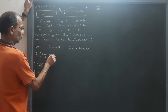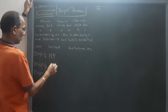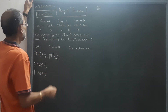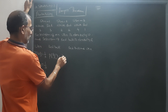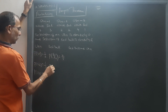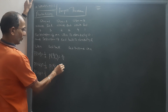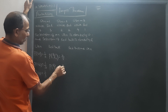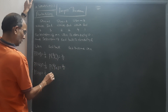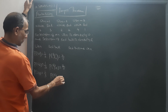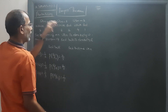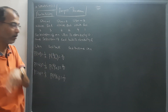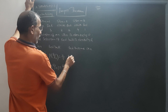The probability of drawing a red ball given that the first urn was selected, P(R|U1), is 3/5, since urn 1 has three red balls out of five. P(R|U2) is 2/5, since urn 2 has two red balls out of five. And P(R|U3) is 1/5, since urn 3 has one red ball out of five.